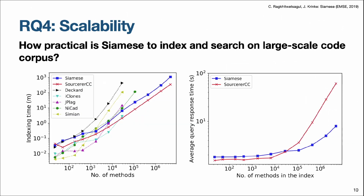The last aspect is scalability. Siamese can scale to 300 million lines of code and can give search results within seconds. It has comparable performance to SourcererCC and is better than the other tools.